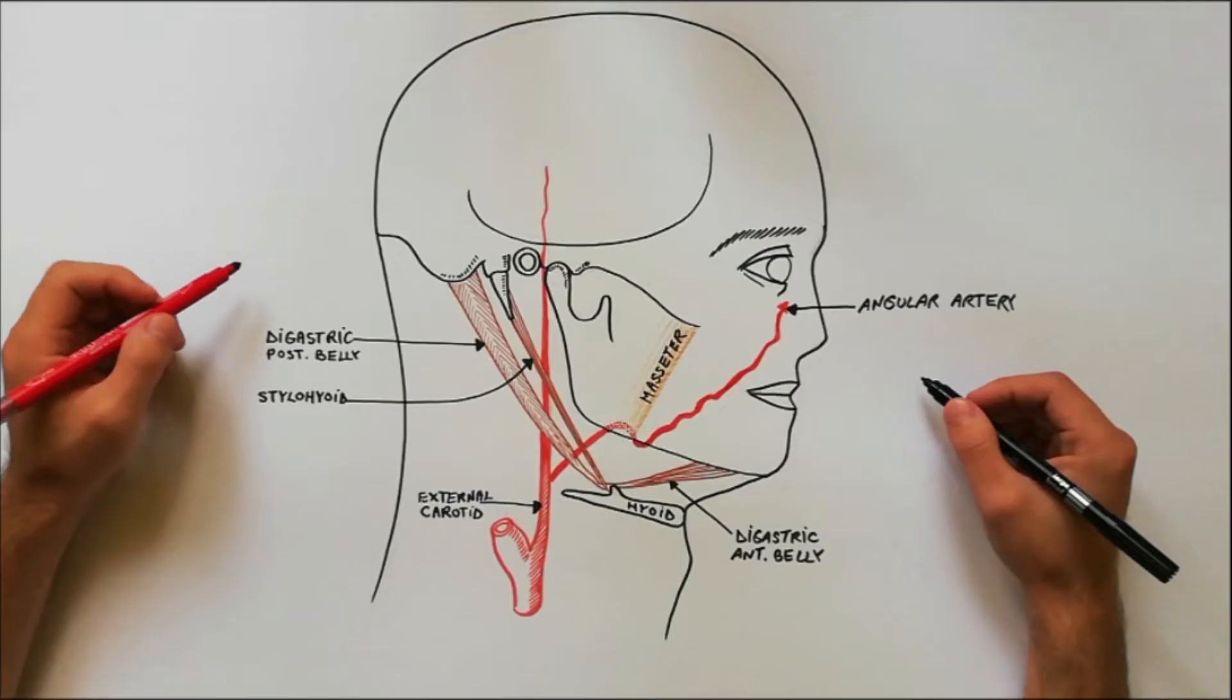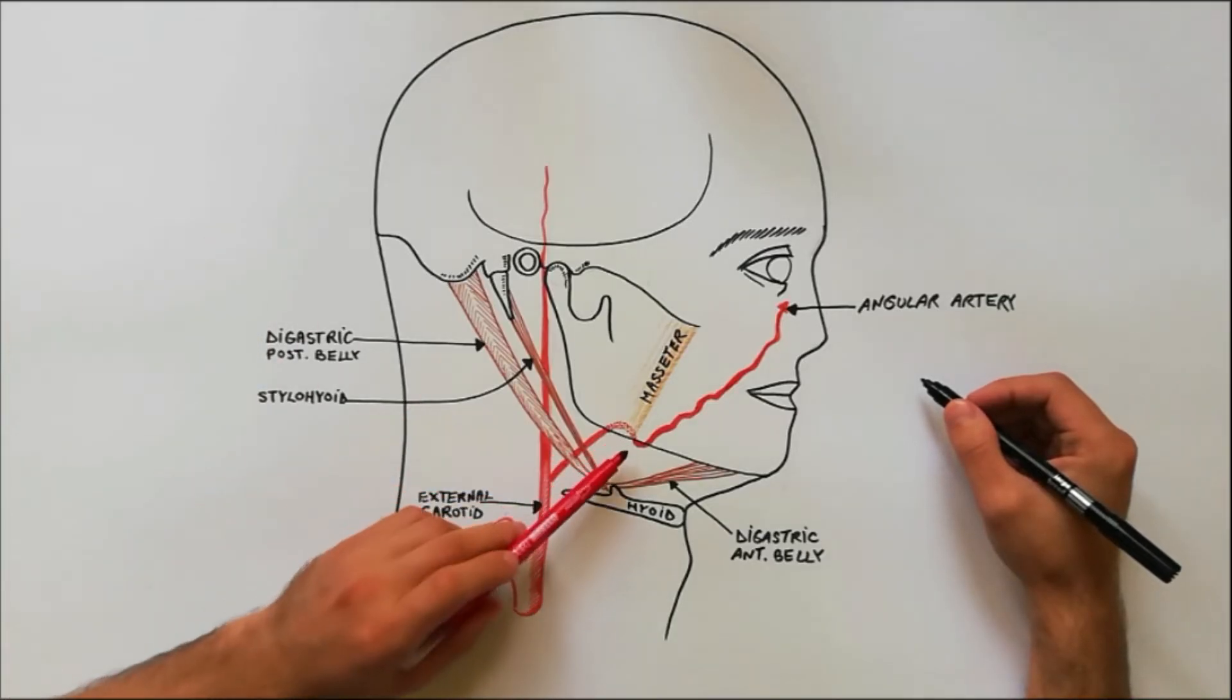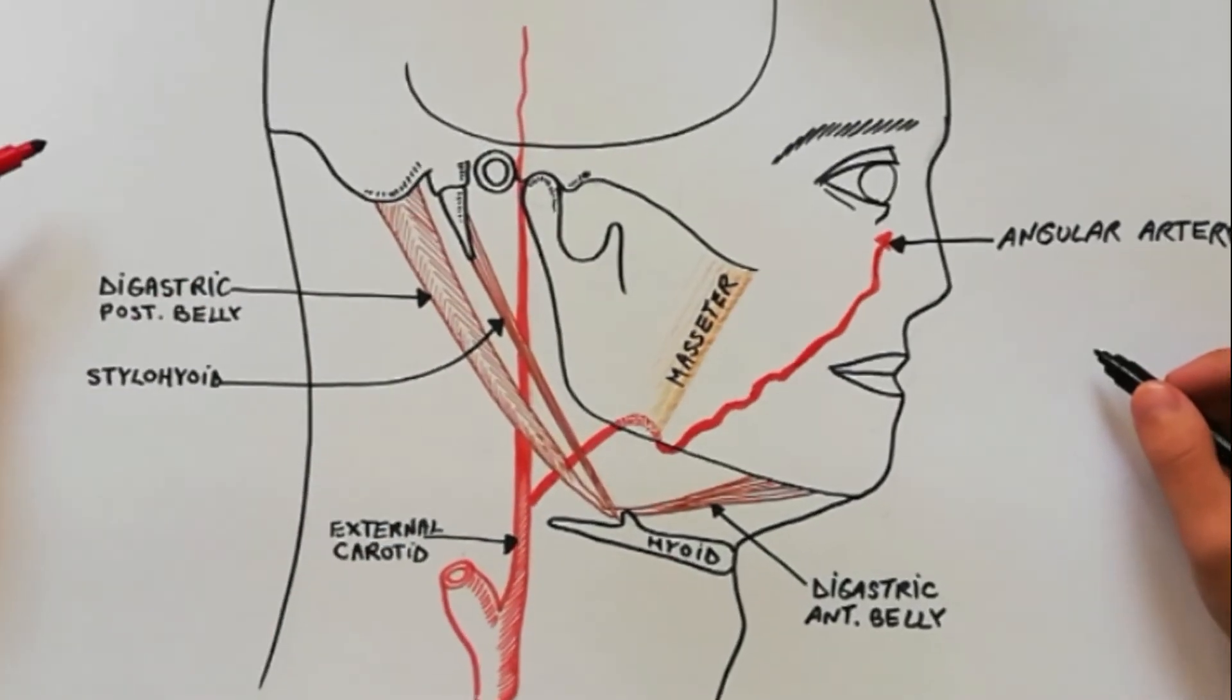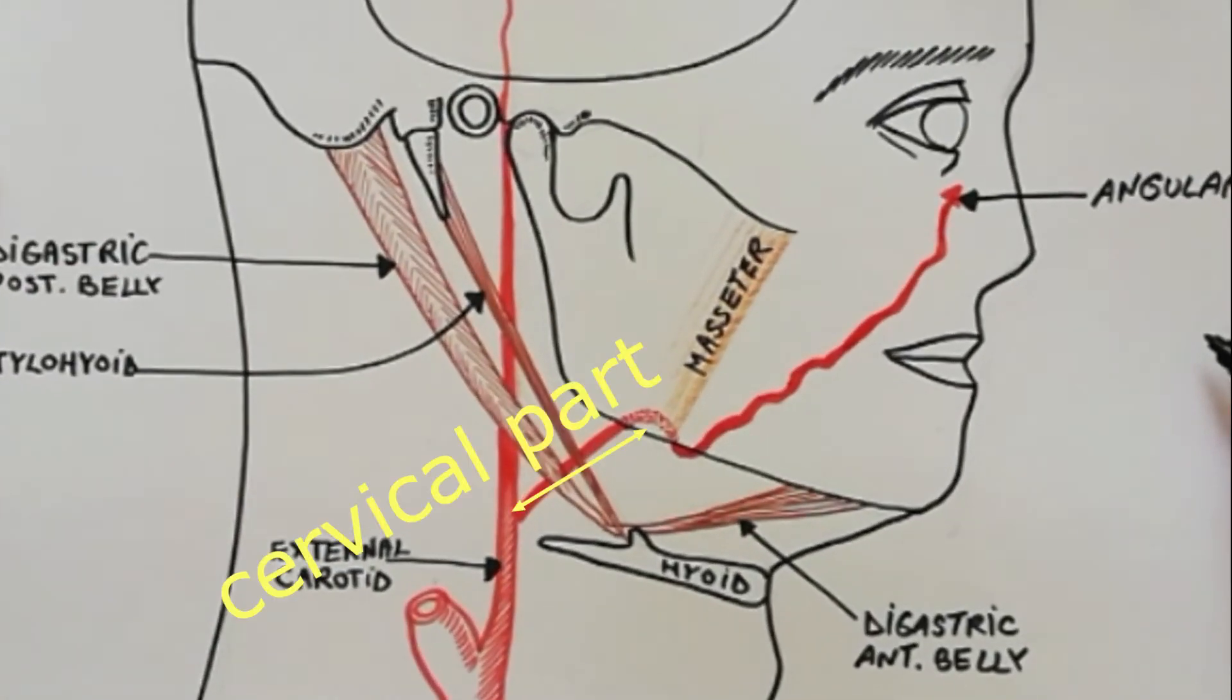The anteroinferior angle of the masseter muscle marks the boundary between the two parts of the facial artery: the cervical part and the facial part.